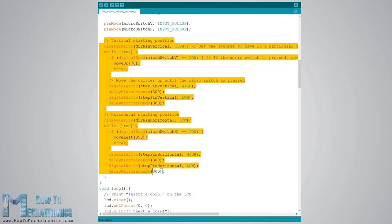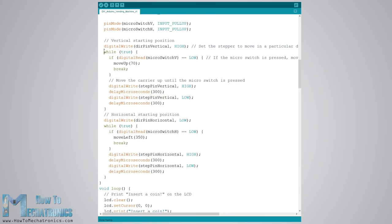Before entering the main loop we also set the carrier to its starting position which is defined by the 2 micro switches. So with the while loop we keep moving the carrier to its starting position and once the 2 micro switches will be pressed the motor will stop and move to the desired starting position.